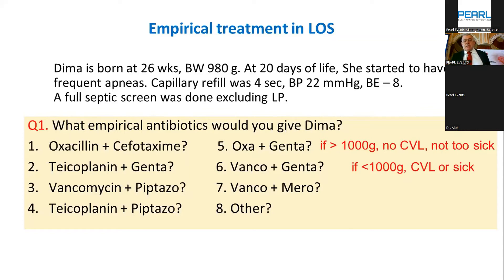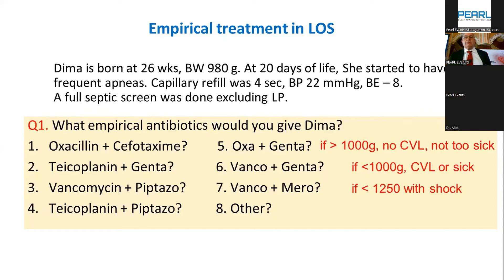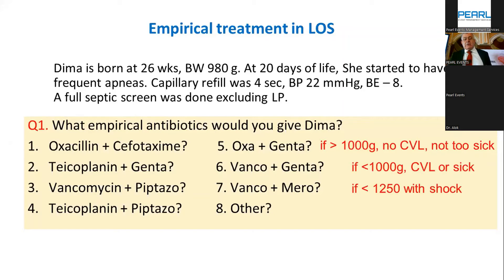I would like to suggest we avoid meropenem as empirical treatment at all costs. If you give too much freedom to use meropenem to avoid mortalities, you may have more mortalities from meropenem resistance later. A possible exception is the shocked patient below 1,000–1,250 grams where meropenem could be a reasonable first choice. But for any patient who looks even mildly septic, meropenem is a second or third choice. For this case — extremely low birth weight, shocked — I would start vancomycin and meropenem.